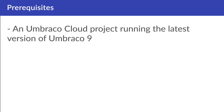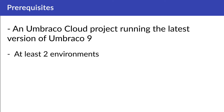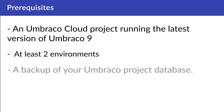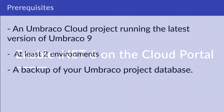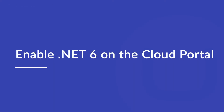To upgrade your cloud project, we recommend upgrading your current cloud project to the latest version of Umbraco 9, with at least two environments, and a backup of your Umbraco 9 project database. Once you've taken the backup of the project database, we'll move on to the next step.